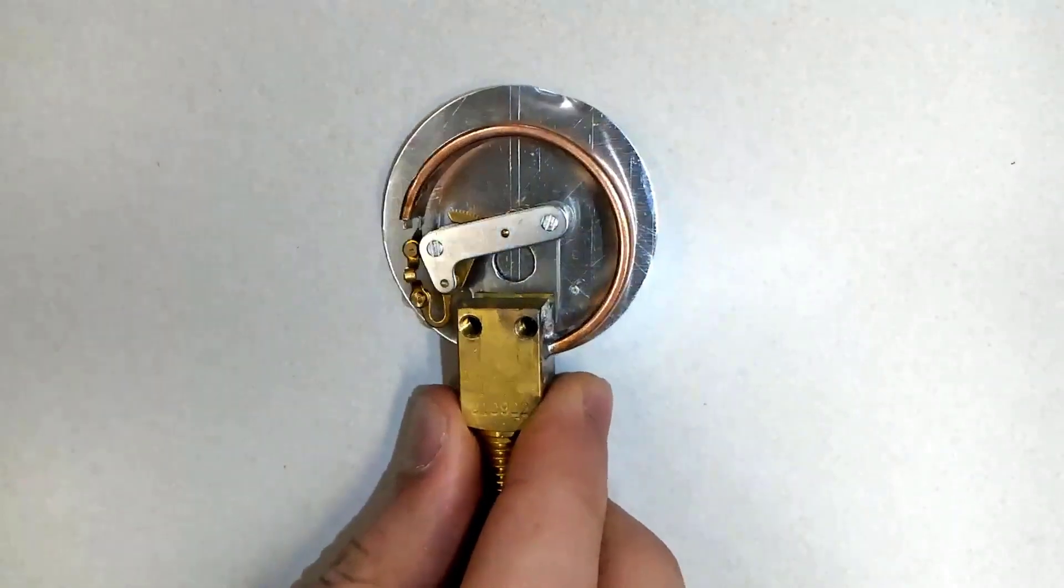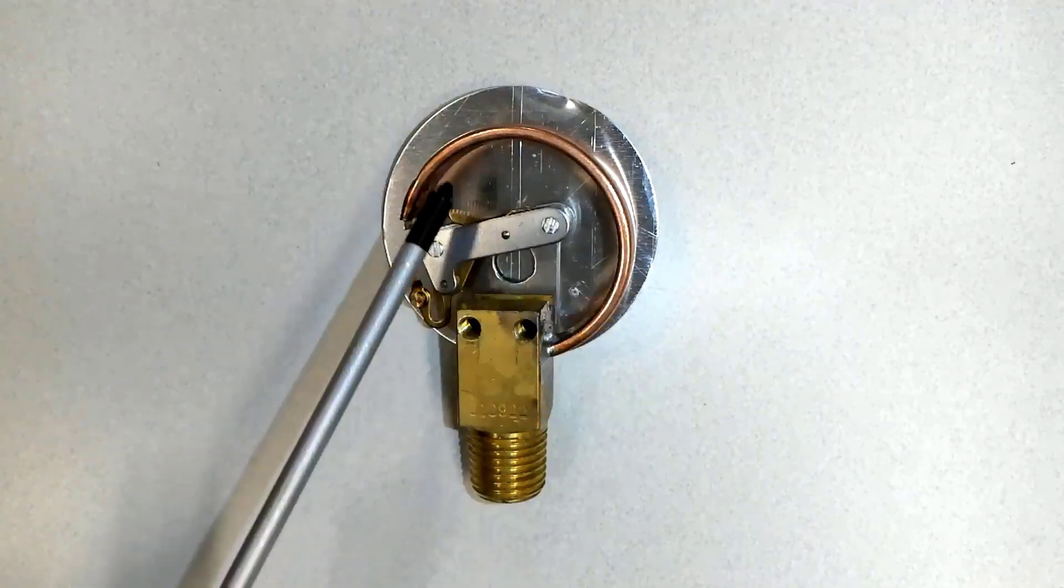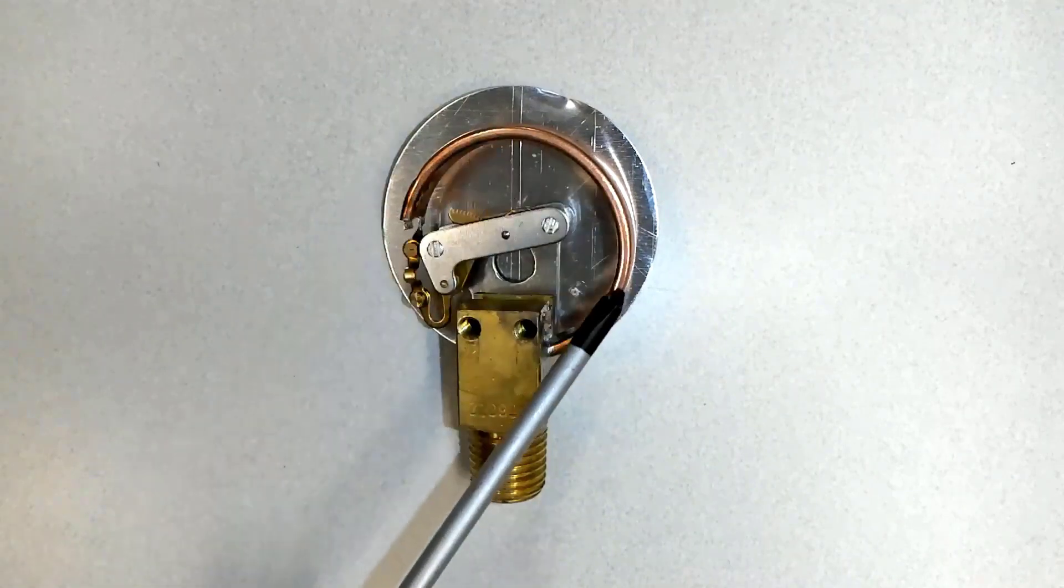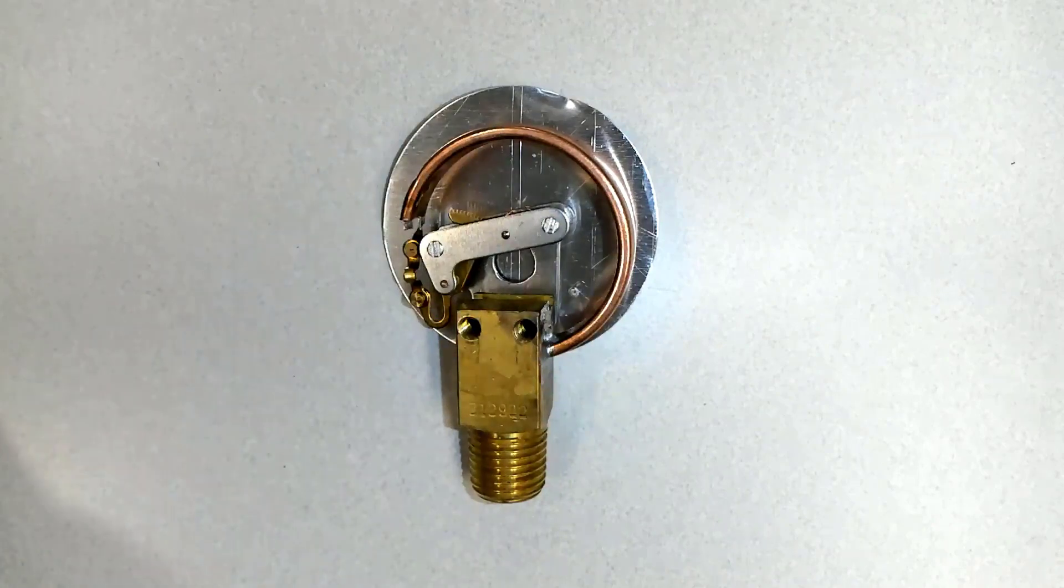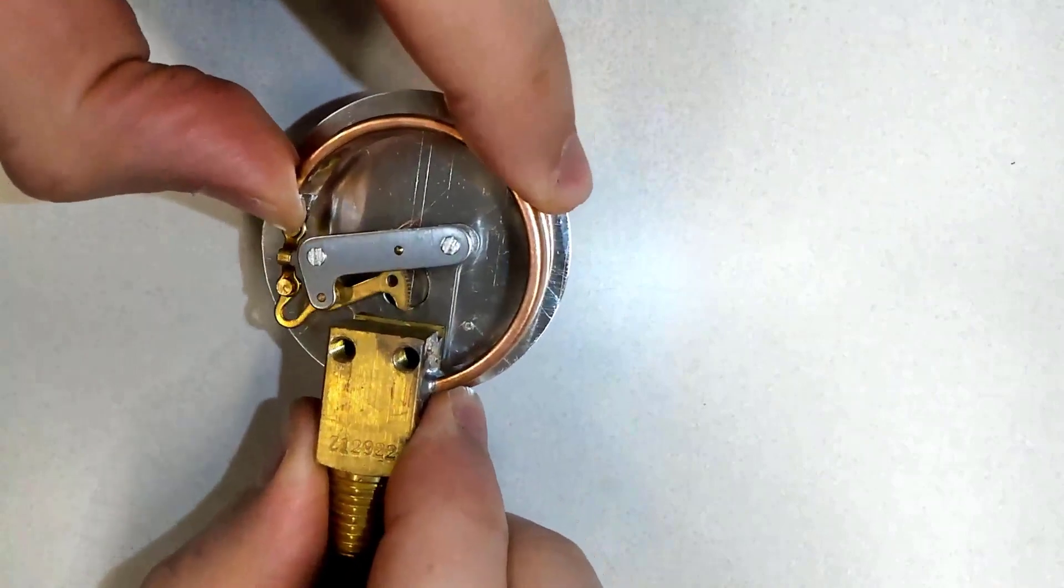Once the fluid goes inside this Bourdon tube, it tries to straighten the tube. So the tube is C-shaped, and when the fluid goes inside, it tries to straighten the tube like this, as you can see.